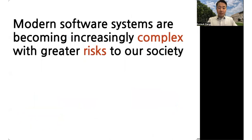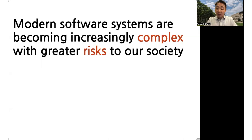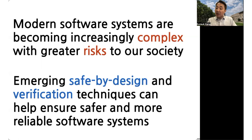To conclude, software systems are becoming much more complex every day, and as a result they pose greater risk to our society. Traditional techniques such as testing, although very important, are not sufficient to ensure safety and reliability. In this talk, I've tried to convey that emerging techniques in safety architecture and formal verification can help ensure safer and more reliable software systems. Thank you.